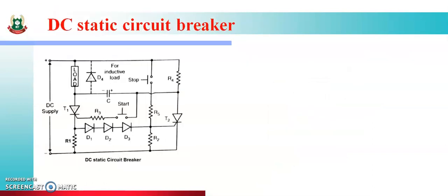Now we are going to study the DC static circuit breaker. This is the circuit diagram for DC static circuit breaker. In this we are using DC supply — इसीलिए इसको DC circuit breaker बोल रहे हैं। एक load use किया है, दो SCR use किए हैं T1 and T2, and we are using two push buttons — one is the start push button and another one is the stop push button.